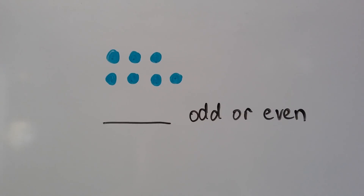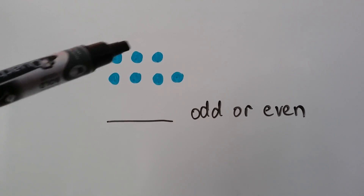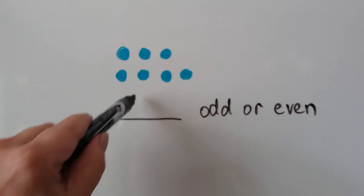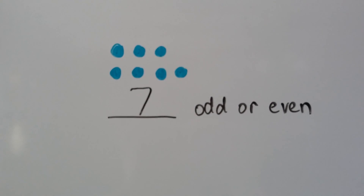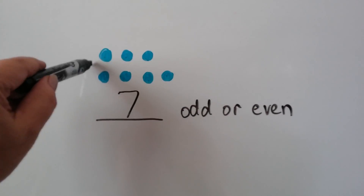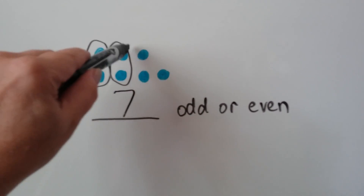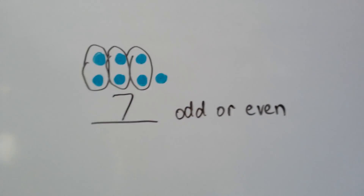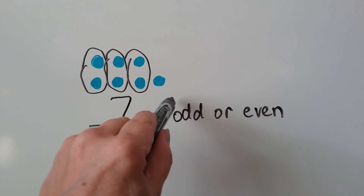How about now? Let's count them. 1, 2, 3, 4, 5, 6, 7. We'll make pairs. We have one left over, so that means it's odd.